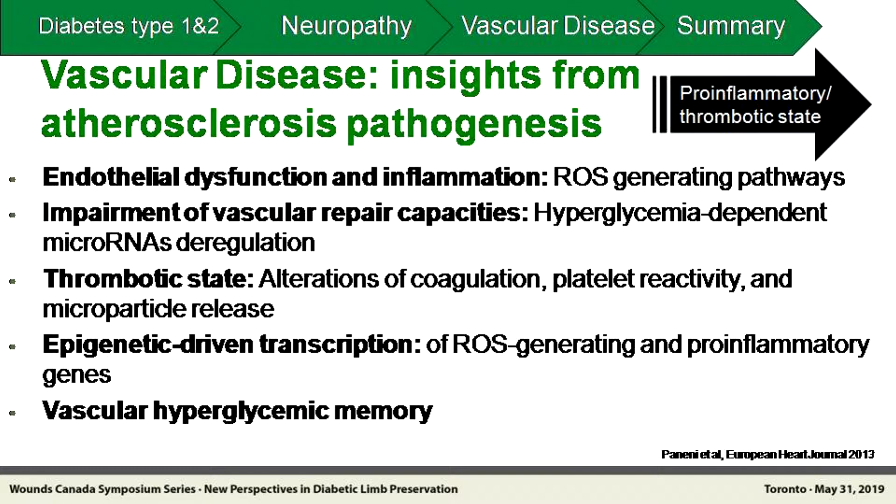Another important concept is vascular hyperglycemic memory — in diabetes we call it the legacy effect. It appears we are intervening quite late, and we need to look at interventions in the pre-diabetes stage. In type 2 diabetes, our tools are not great, and once patients are diagnosed, they already have about 80% dysfunction of their beta cells, with the underlying process likely ongoing for 10 years or more. This needs to be taken into account when planning interventions.